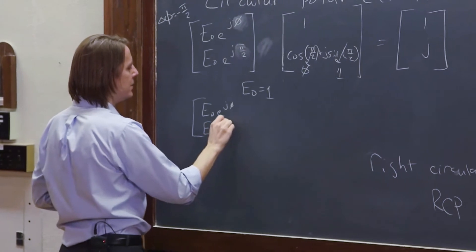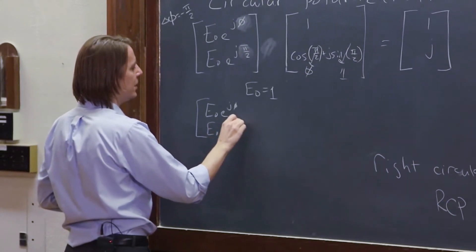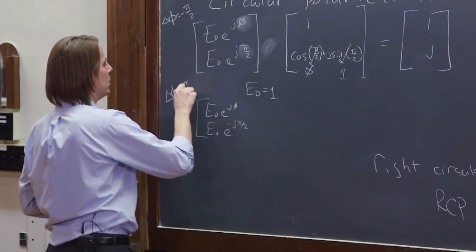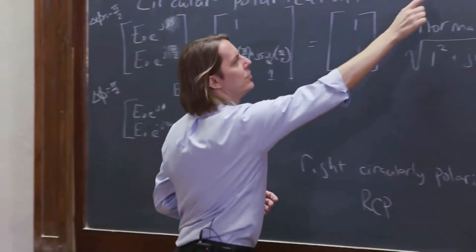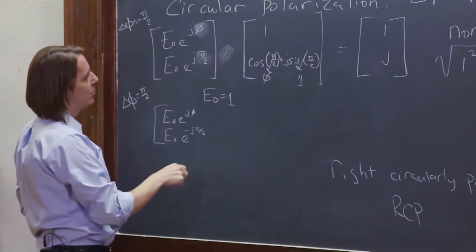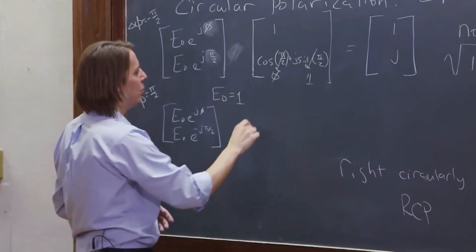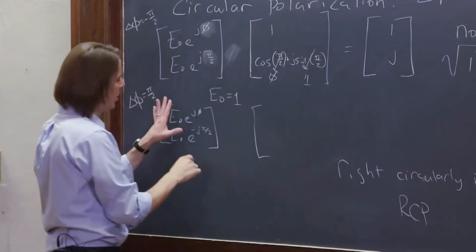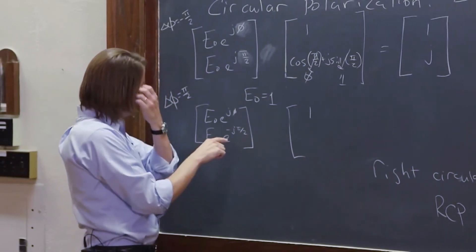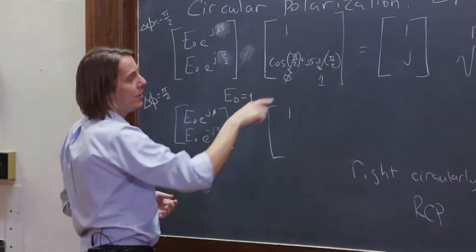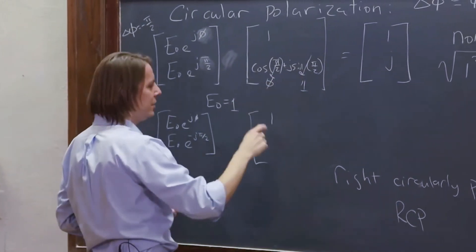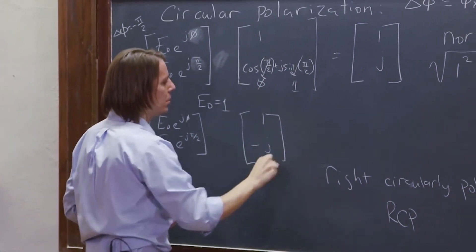e0 e to the minus j pi over 2. Because if delta phi is pi over 2, and this one is 0, then phi y must be negative, and so e to the minus j pi over 2. Same thing, make e0 equal to 1. Then this is going to become e to the j 0 is 1, and this is going to become the cosine of minus pi over 2 is still 0, but the sine of minus pi over 2 is minus 1, and minus 1 j is minus j.